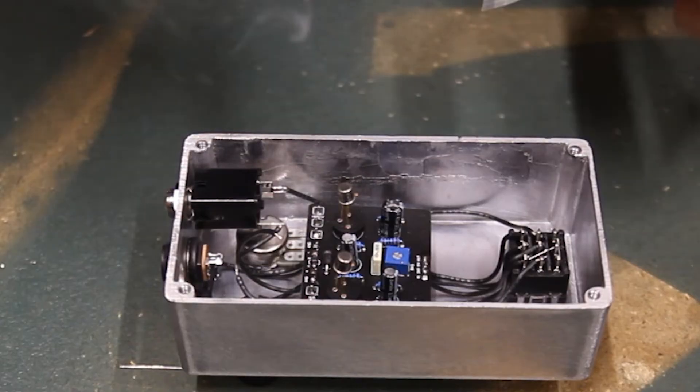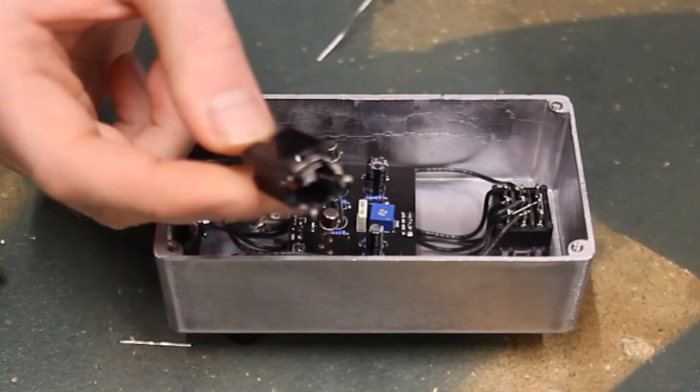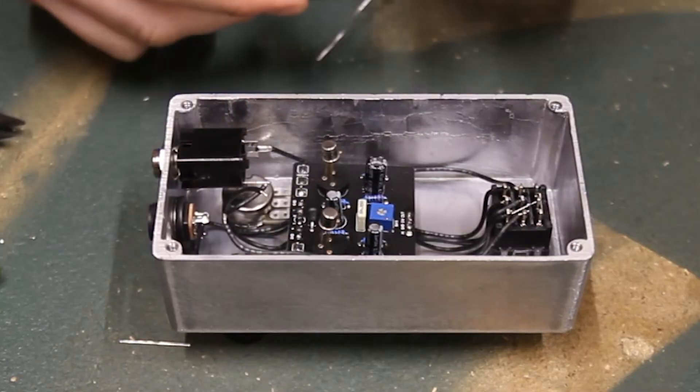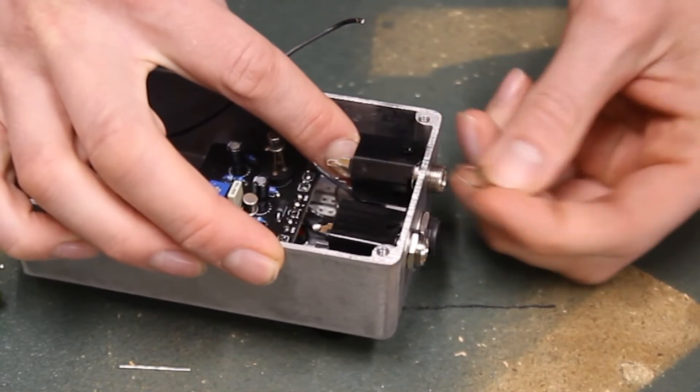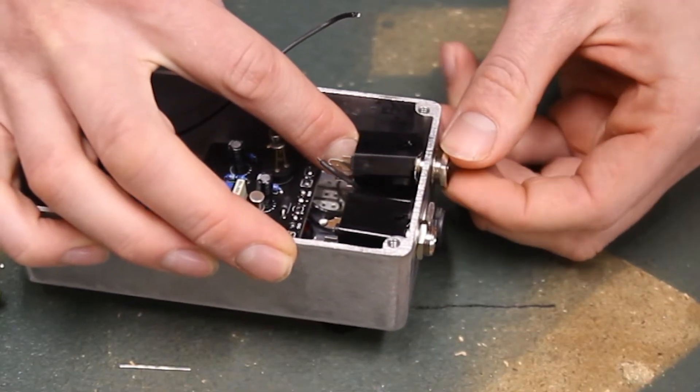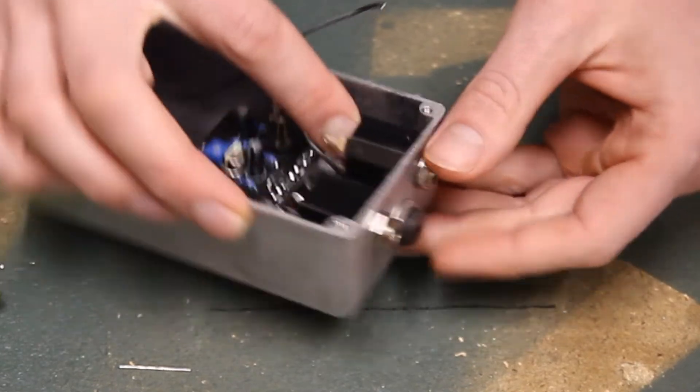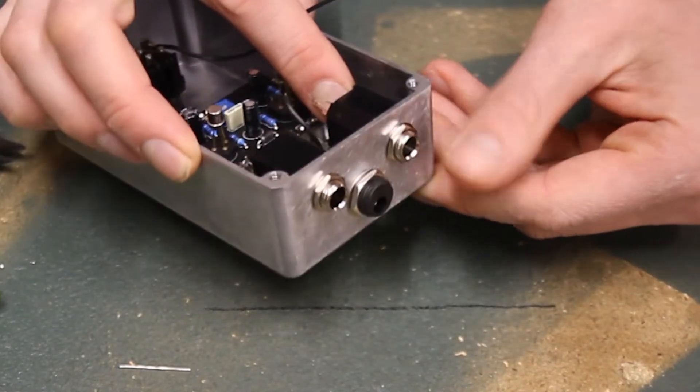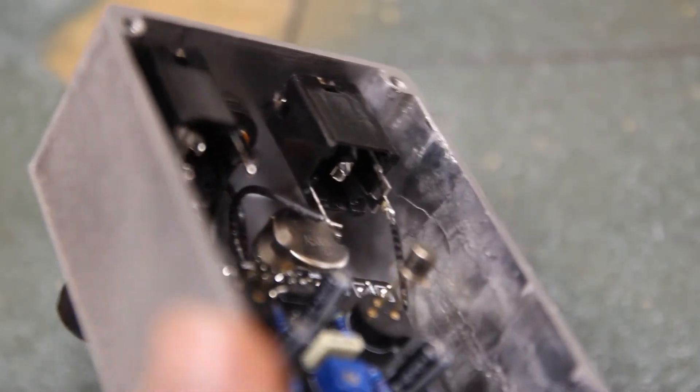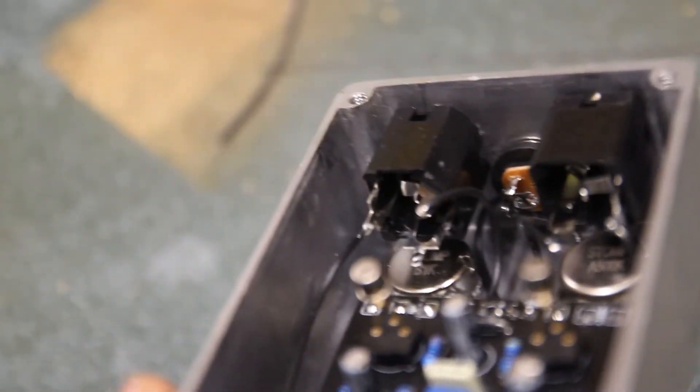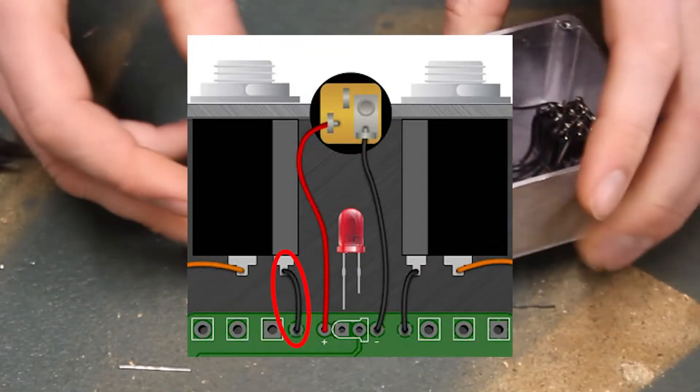Now take the other quarter inch jack and this will be our input jack. If it has two lugs it is a tip sleeve jack oriented the same as you did the other one with the straight sided lug on the outside. If it has three lugs it is a tip ring sleeve jack. Ignore the lug that doesn't match the other jack. The slanted ground lug should be closer to you than the ground lug on the other jack. Here's a view again for reference.